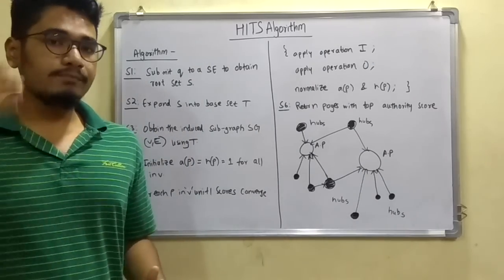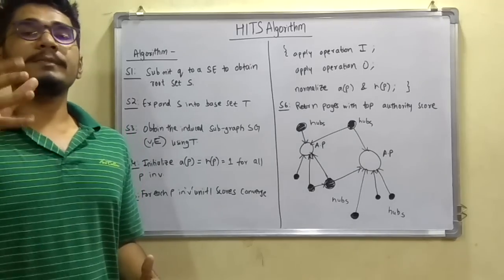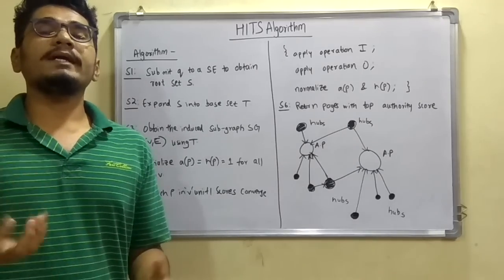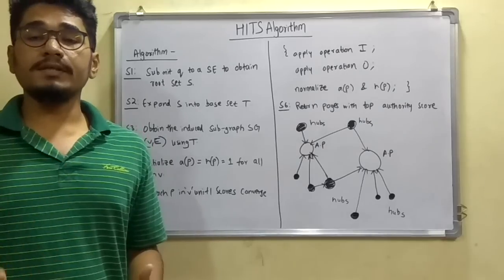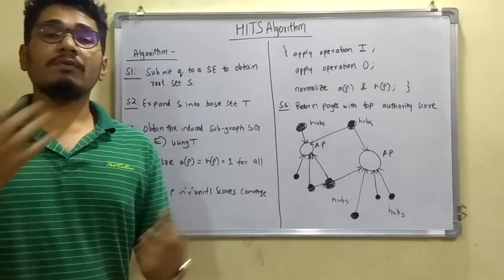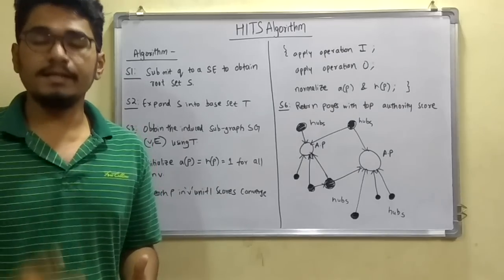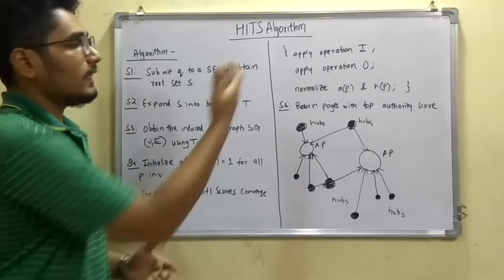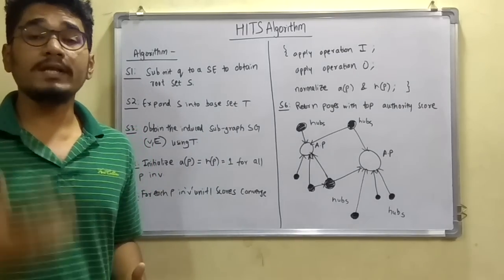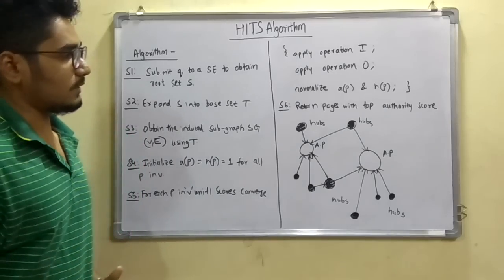The operations are that first you have to apply operation I. Operation I means it will gain the inputs from various other sources. It will converge it, consolidate it and aggregate it, and it will produce the output. Then it will apply operation O, the output operation, to provide it to the user.